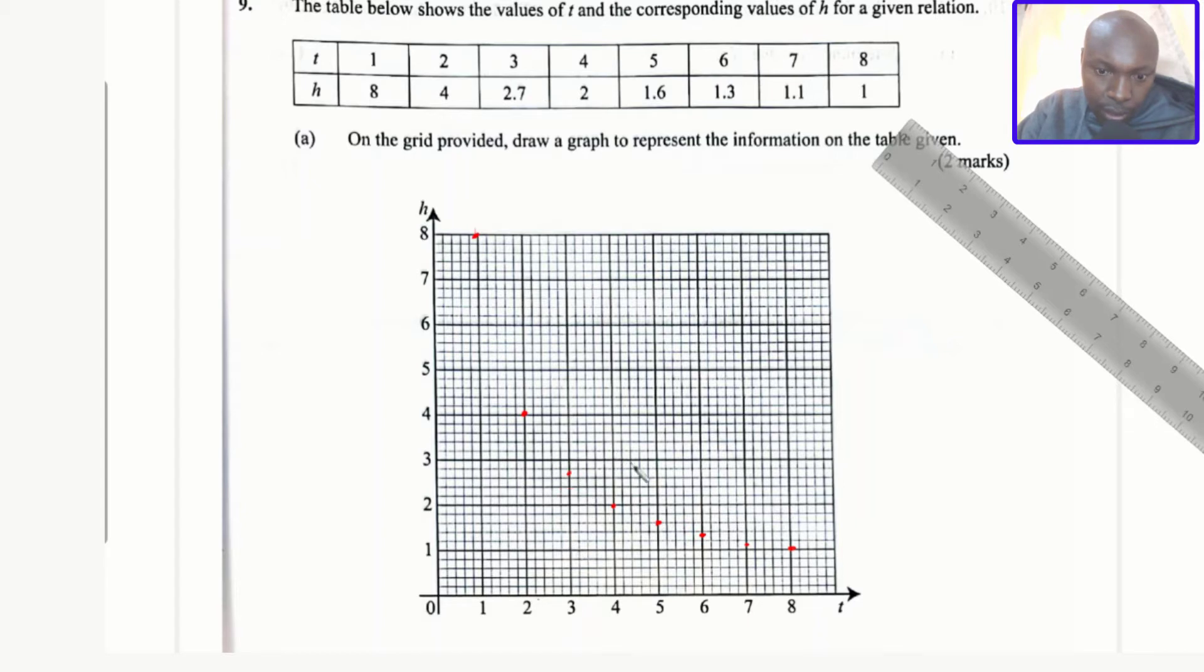It's there. Four, two. Then you have five, one point six is there. Then for six, one point three. Six, one point three there. Seven, one point one. And then finally eight, one. Eight, one.